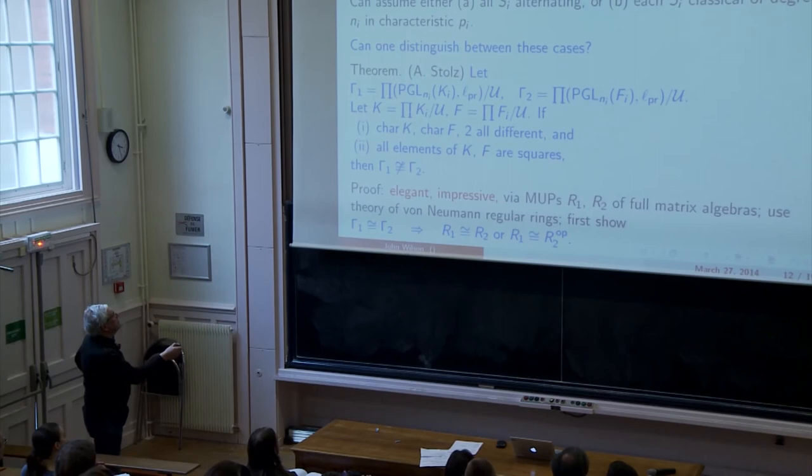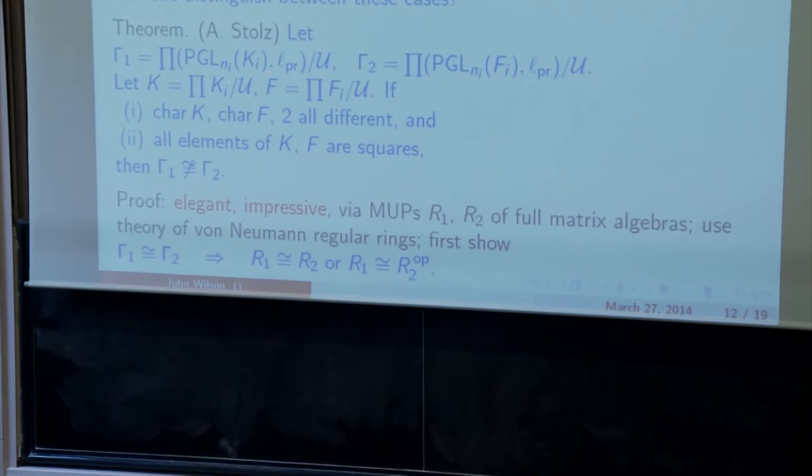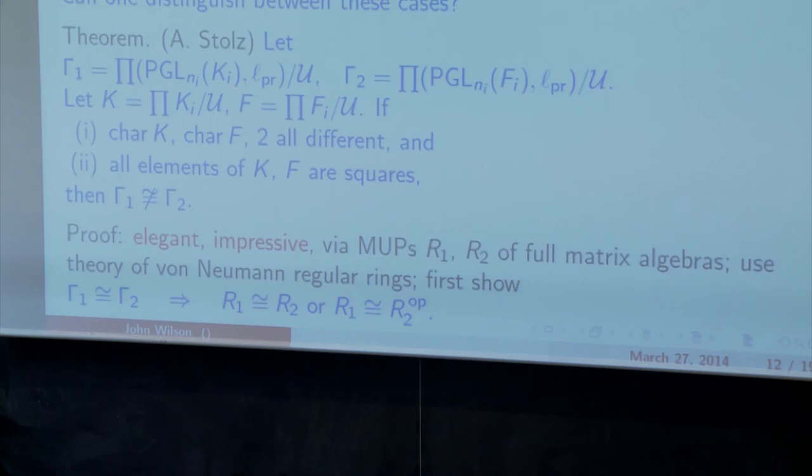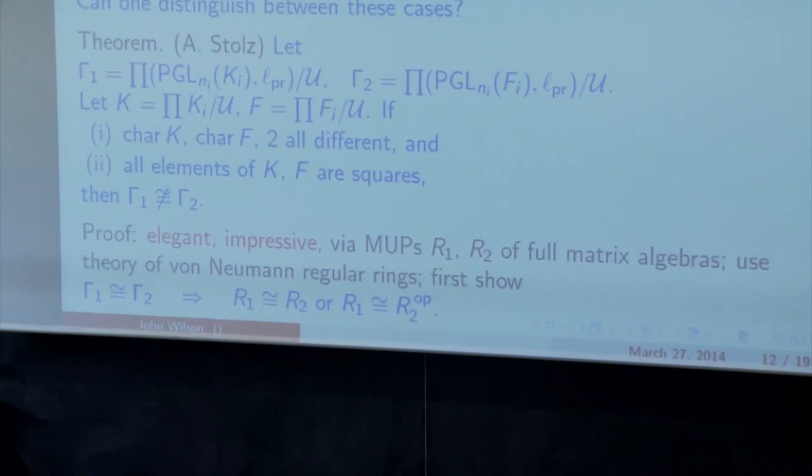And he was able to prove that if the two characteristics of the two fields are different and they're both odd, and also if all elements of K and F are squares, then Γ1 is not isomorphic to Γ2. Now, the proof of this is really quite remarkable. I find it very remarkable. So, Γ1 is made out of projective linear groups over the field Ki. And so, that group is more or less, up to its center, the group of units of the ring of Ni by Ni matrices over Ki. And what Stolz does, he uses a theorem from theory of von Neumann algebras, von Neumann regular rings, first to show that if these two groups are isomorphic, then the corresponding ultraproducts of rings are isomorphic. Well, up to the obvious thing you have to do. You have also to consider the ring with the opposite multiplication.